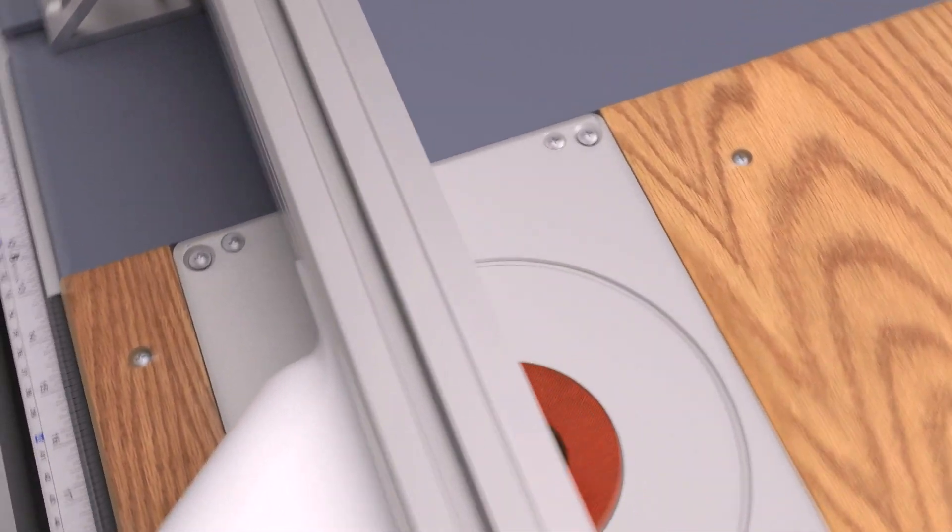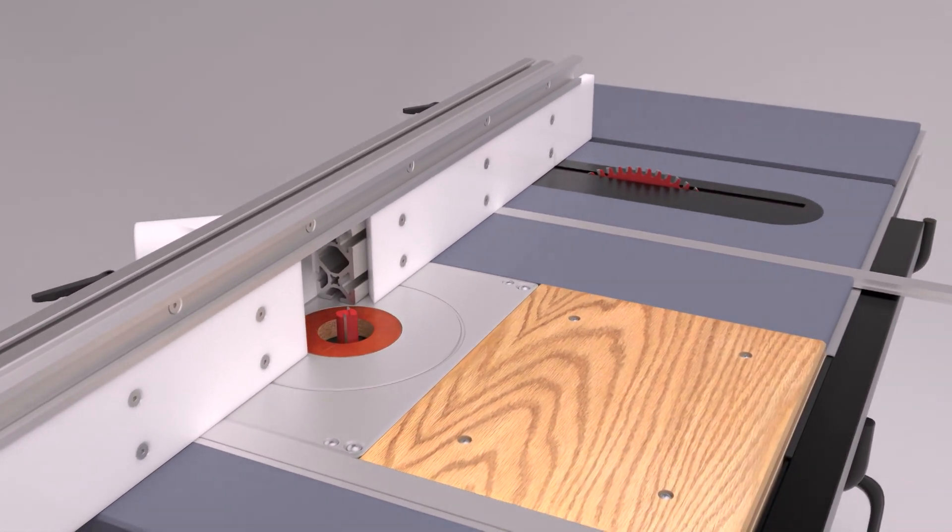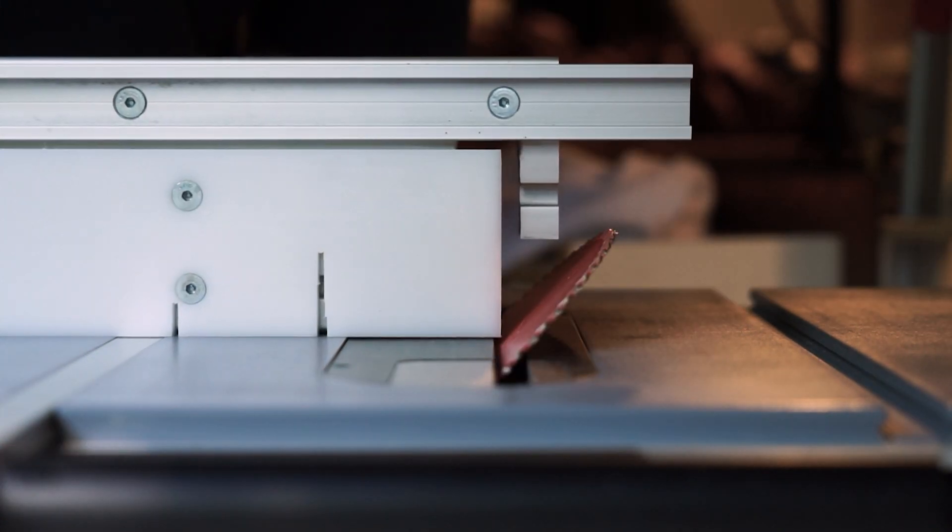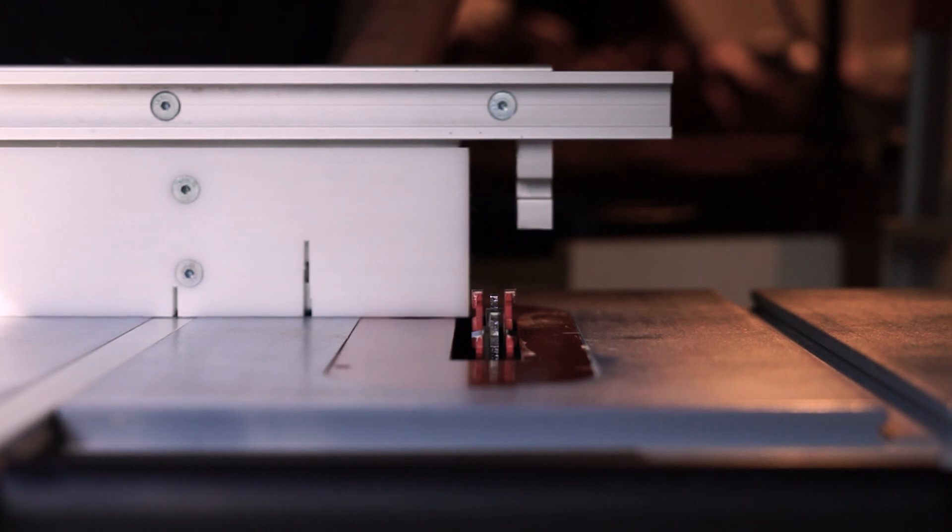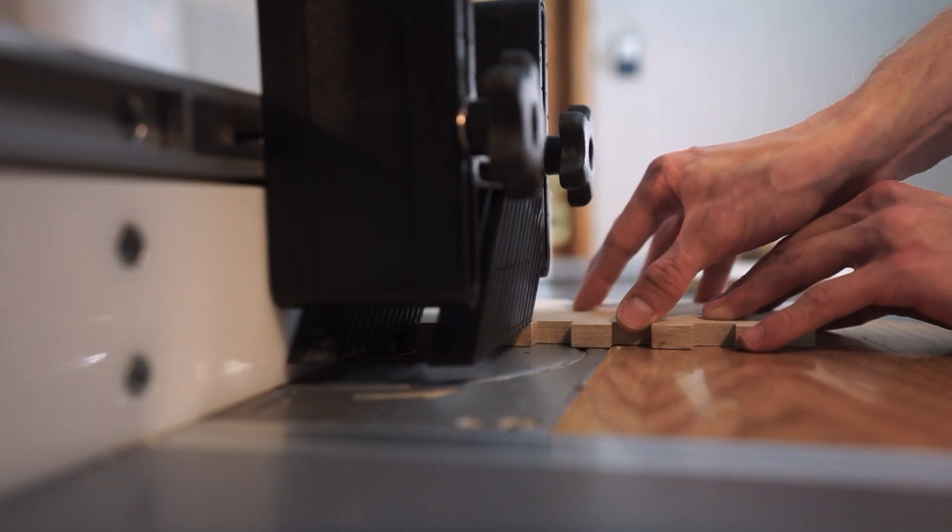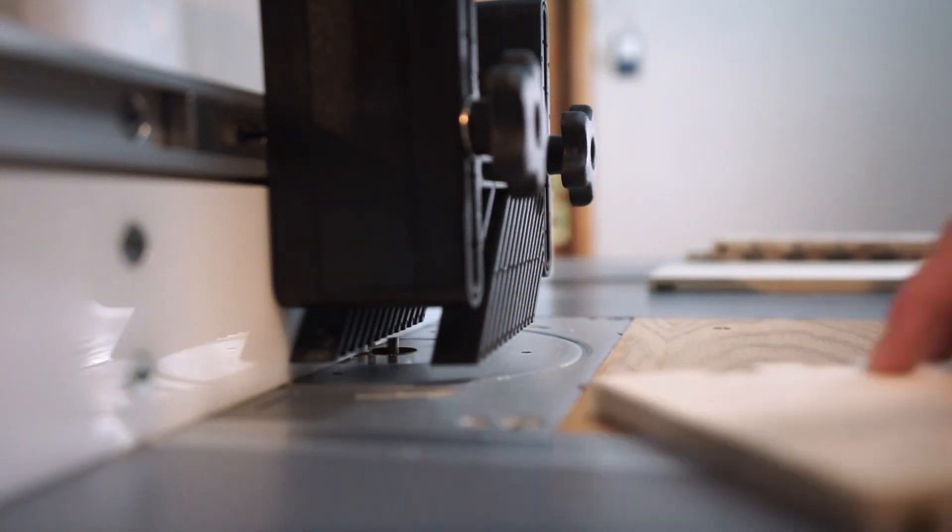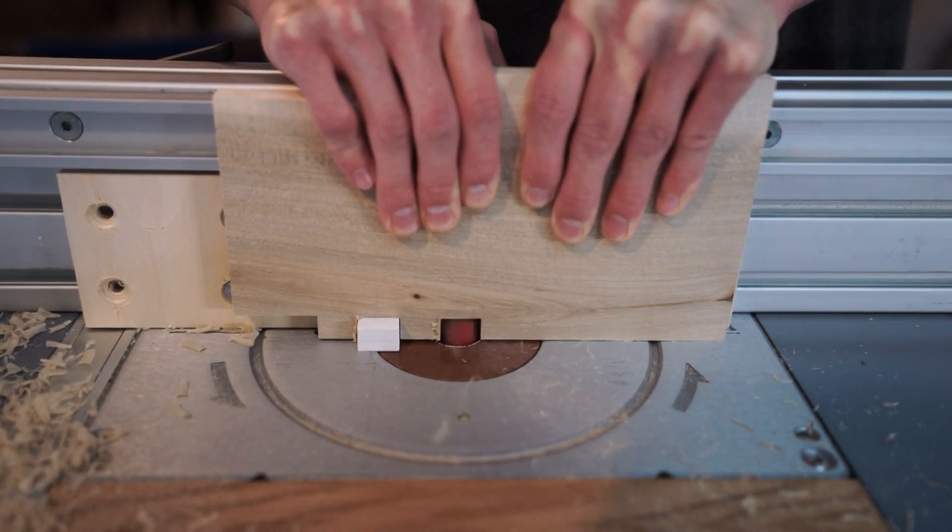The idea with this was to make a multi-function fence that would work just as well with the router table as it does the table saw. I designed the backstop so that any angle of the saw blade or dado set would not cut into the structure of the fence, only the expendable faceplate. The top-mounted T-track allows me to use fingerboards and other attachments. The standard faceplates can also be swapped out for depth stops or specialty jigs.